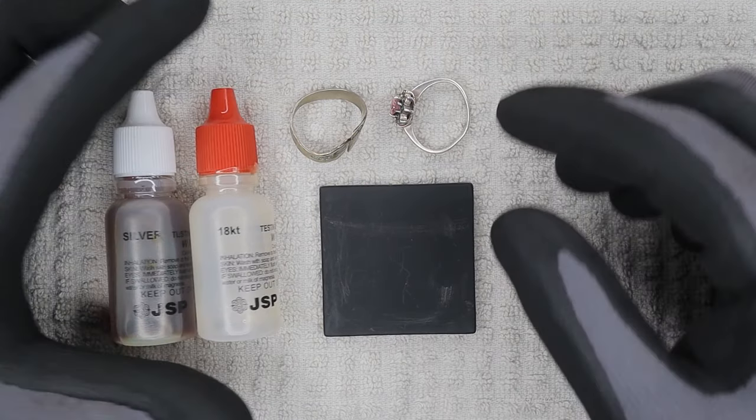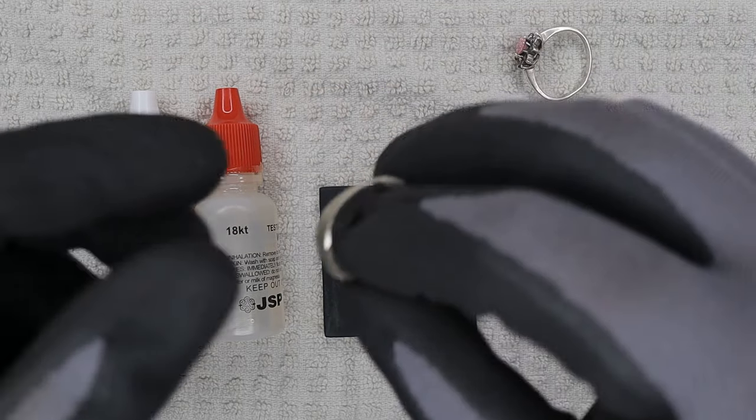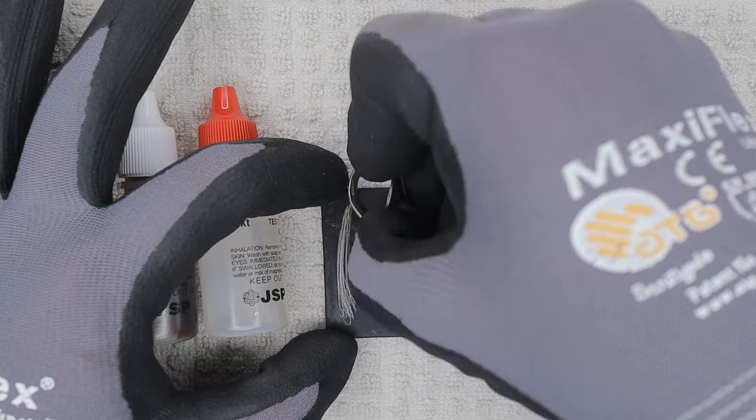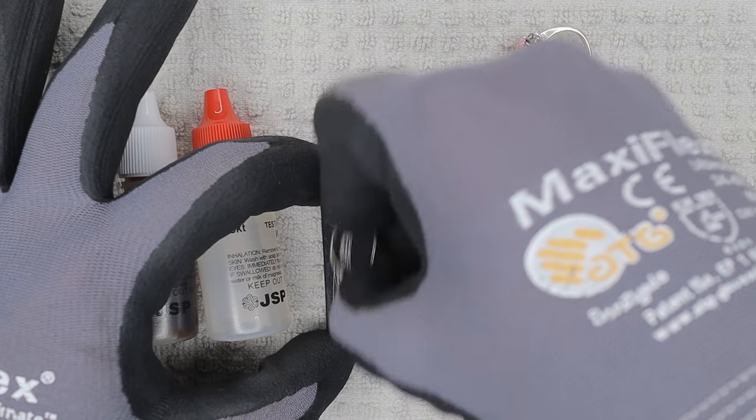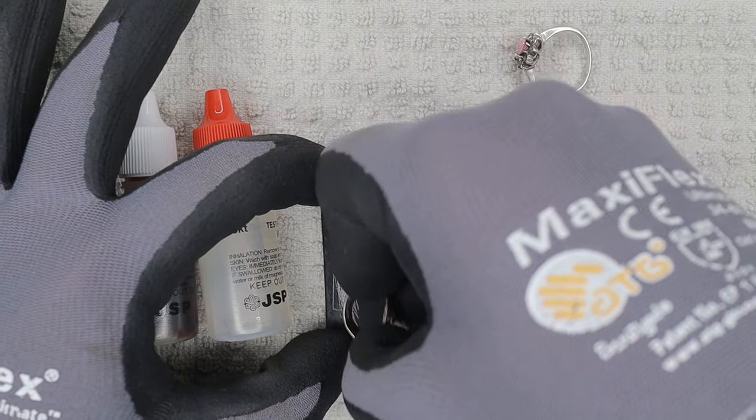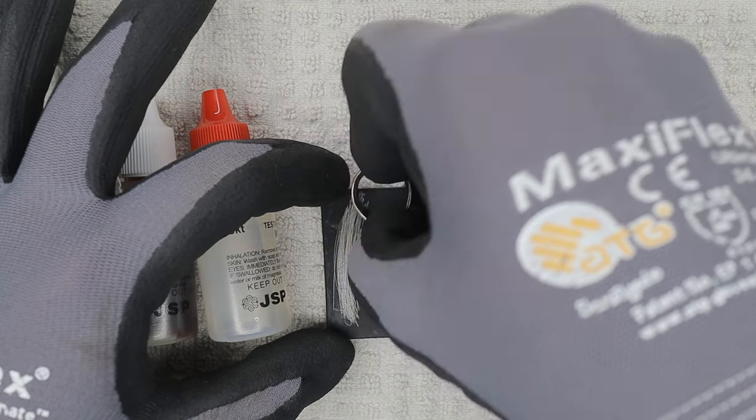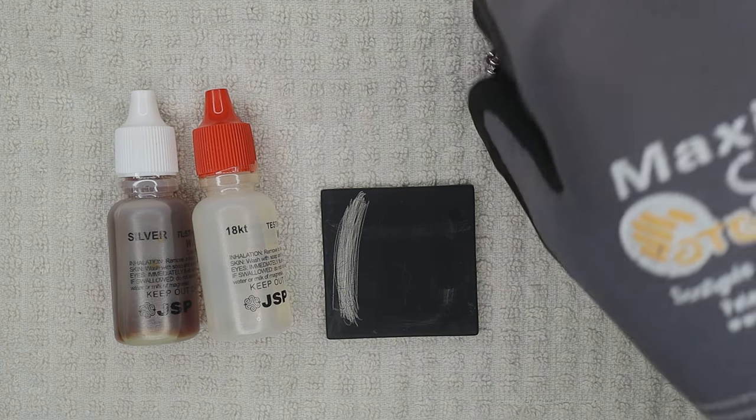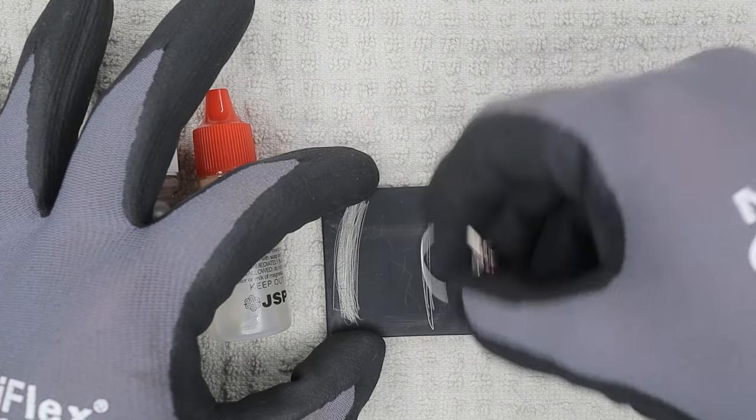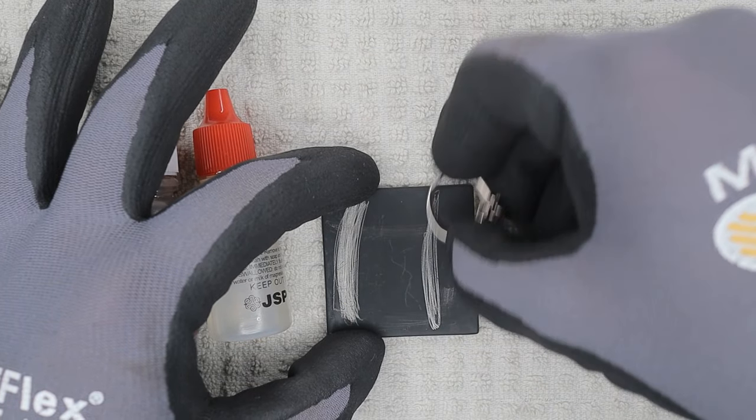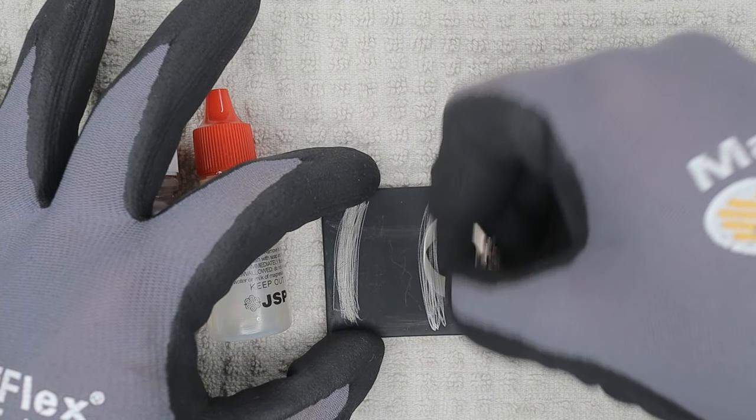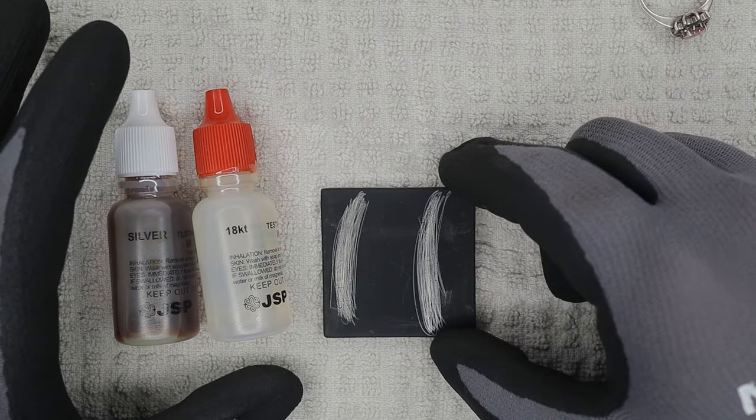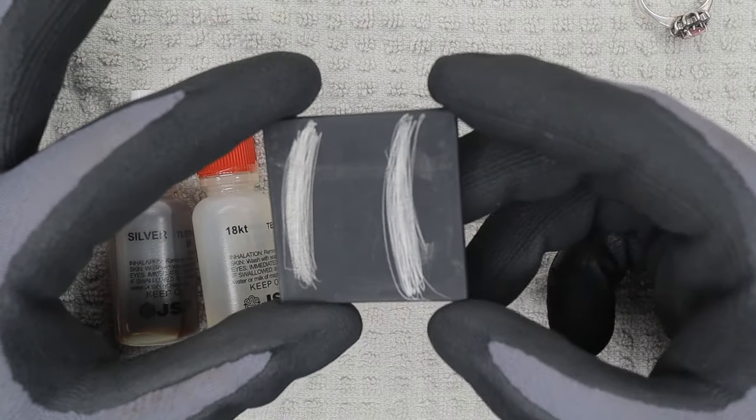The next step is going to be very similar to the gold and platinum. We're going to take each ring and we are going to scrape the alloy onto the scratch pad. I'm going to put extra on here so it's easier for you guys to see, also because I'm going to be using both acids on each line. Here's the one that is marked 925, which is sterling silver. We're going to see if it's really sterling silver or not.